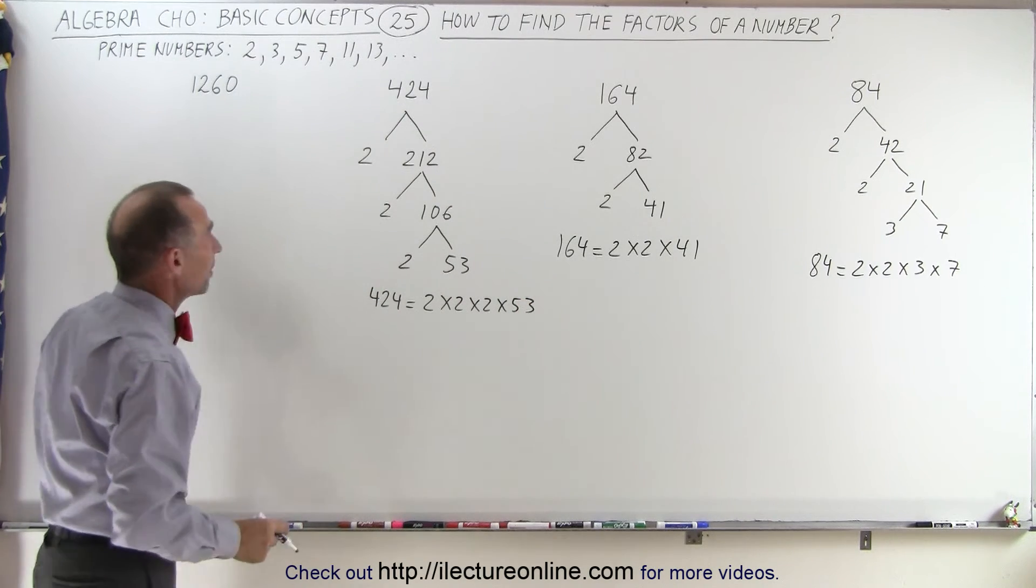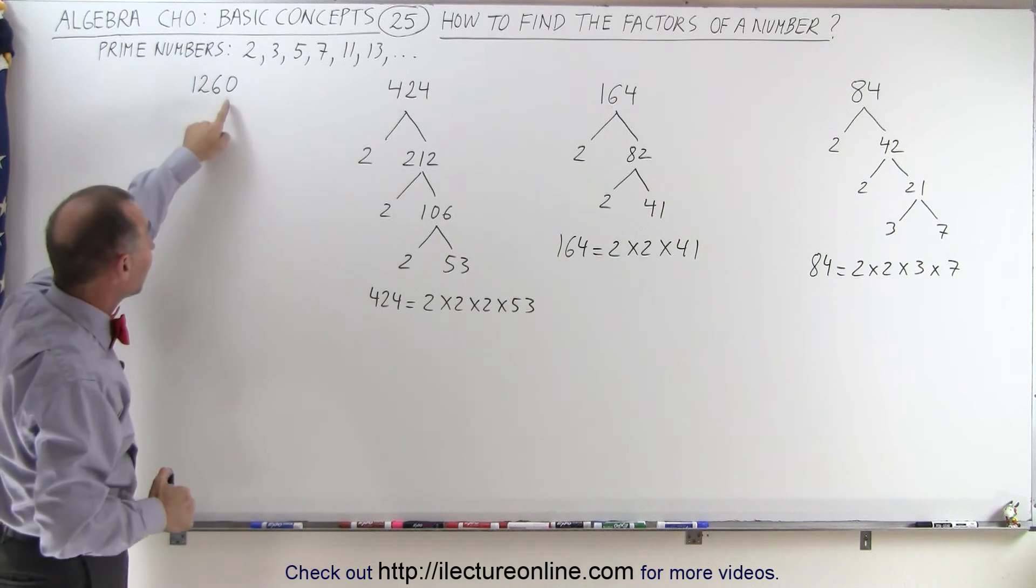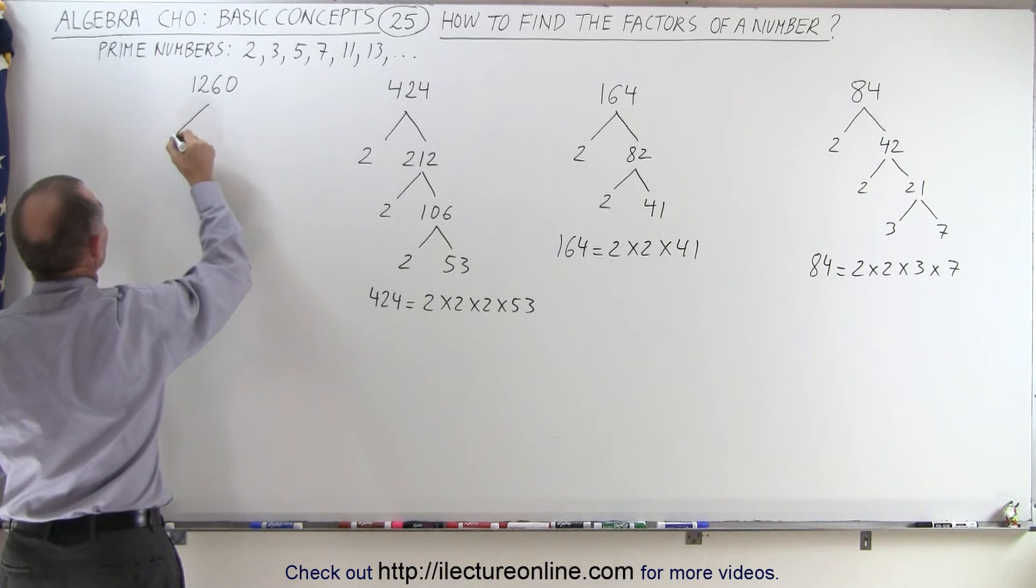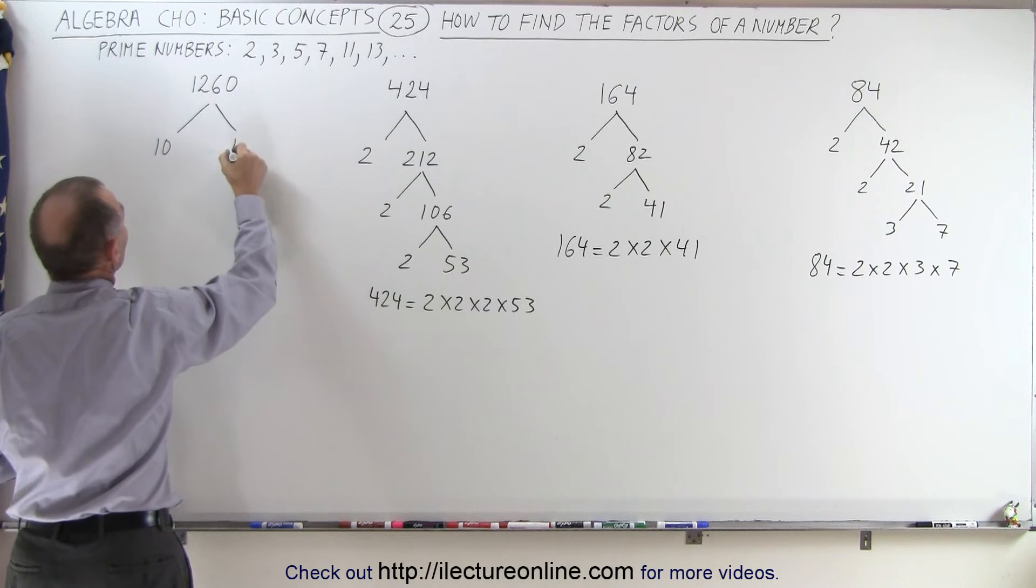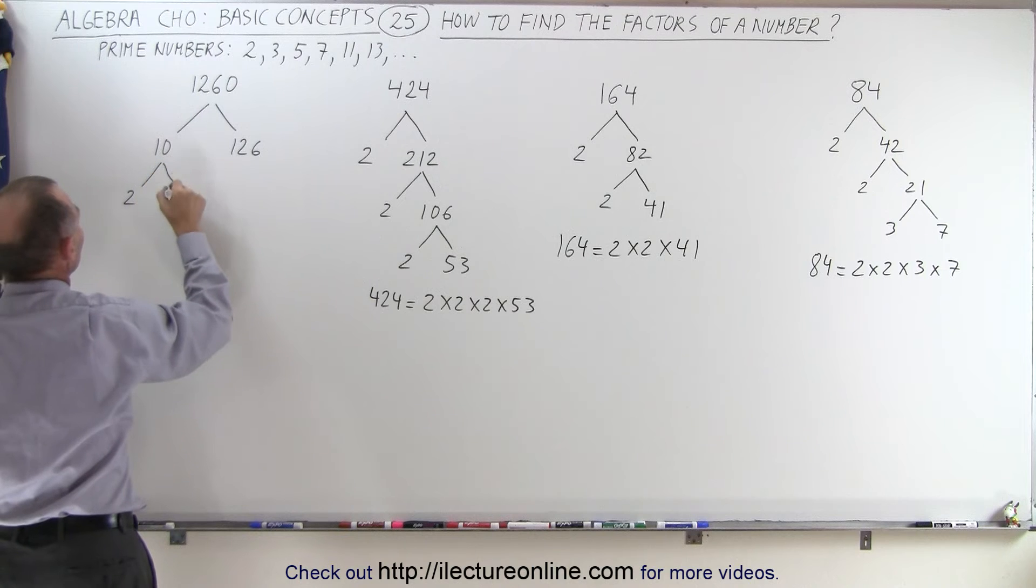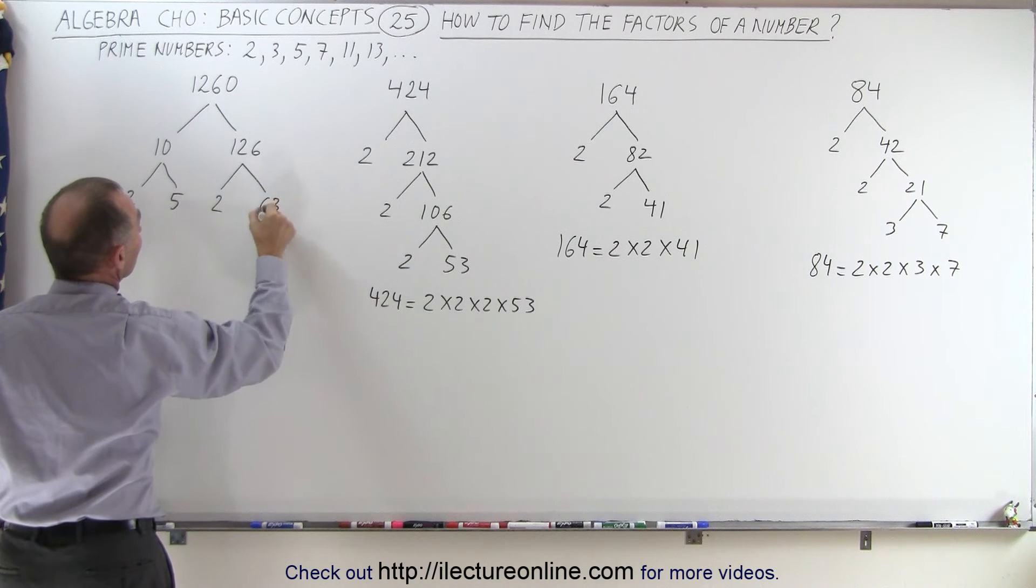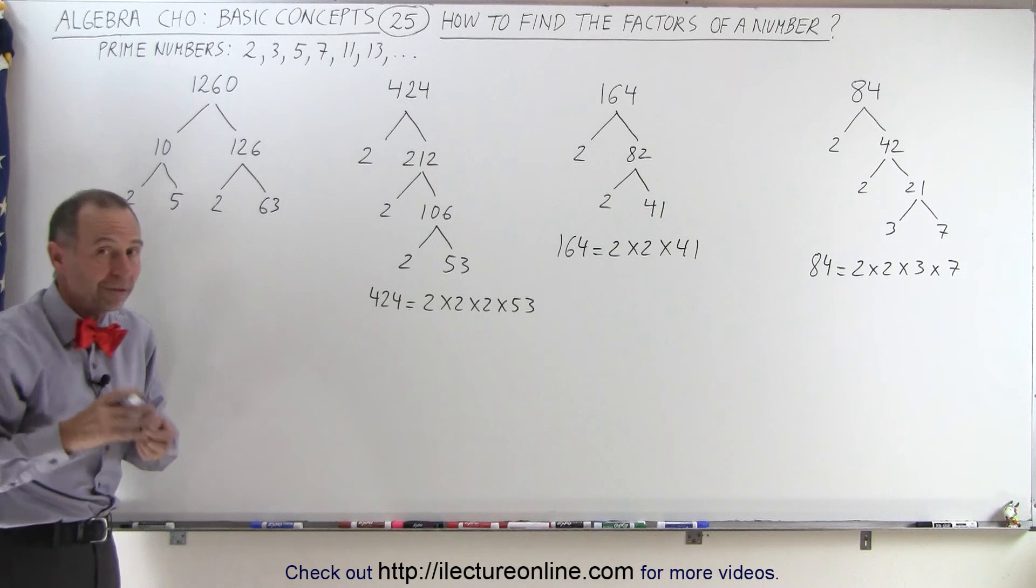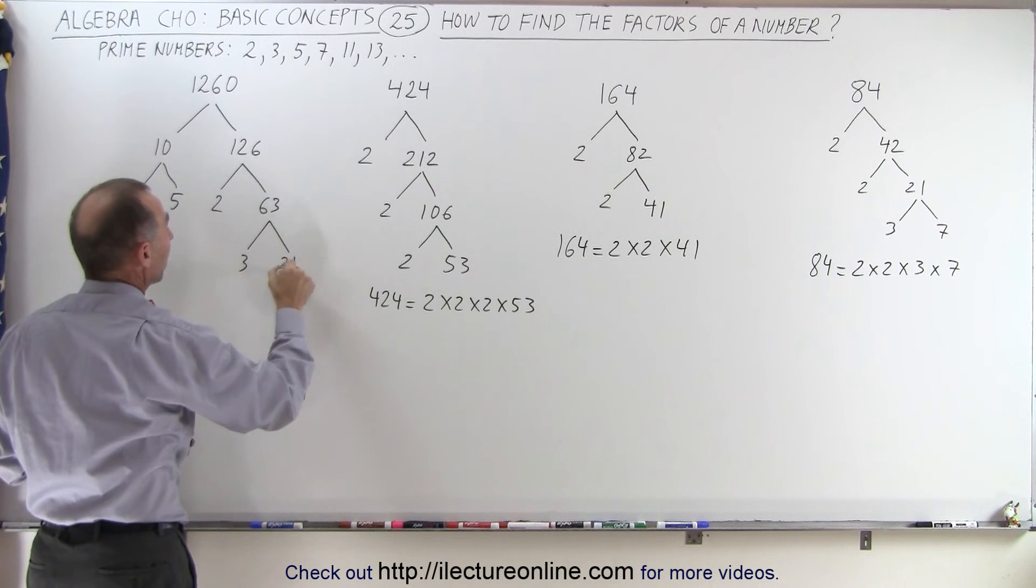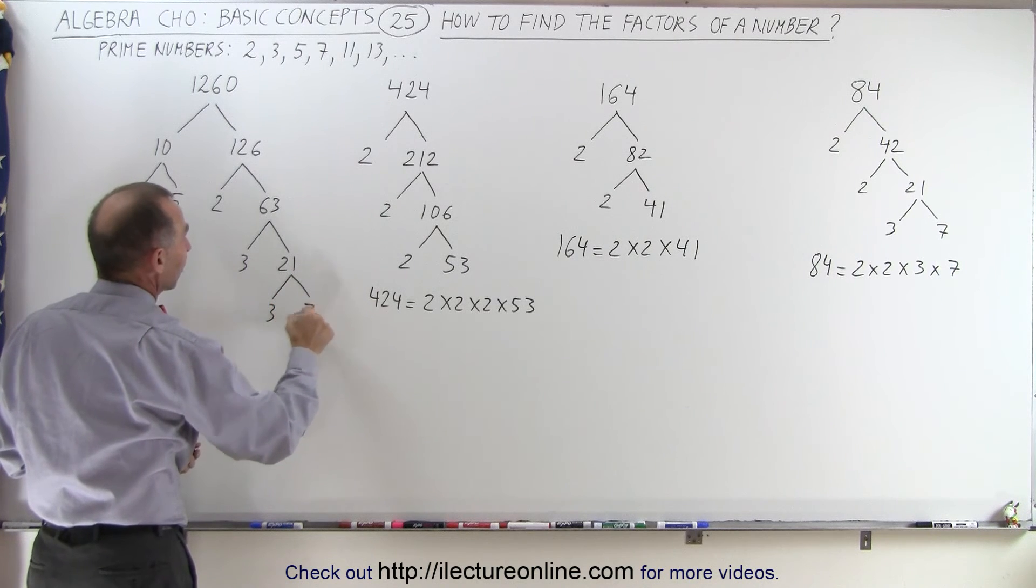What about the number 1260? Again, it's even, we could start with dividing it by 2, but we might make the job a little bit easier by realizing it has a 0 there, so we can divide it by 10. We can start two separate branches. This can be written as 10 multiplied by 126, and then we work each branch separately. 10 can be written as the product of 2 and 5, and 126 can be written as the product of 2 and 63. Now 63 is odd, so it can no longer be divided by 2, but it can be divided by 3, giving us 3 times 21. And 21 can be divided by 3, giving us 3 and 7.